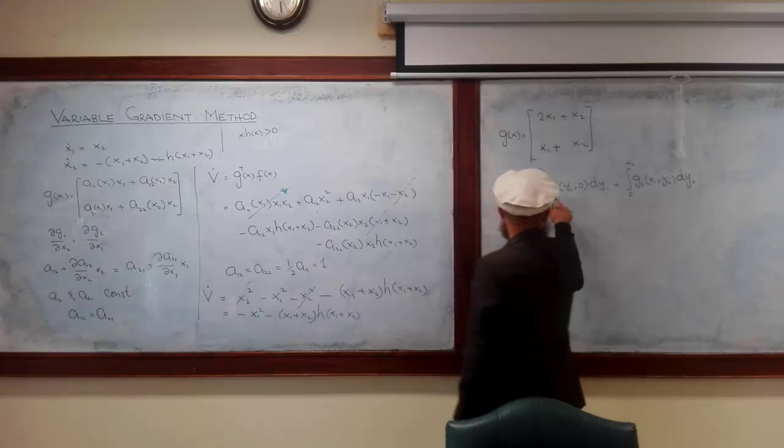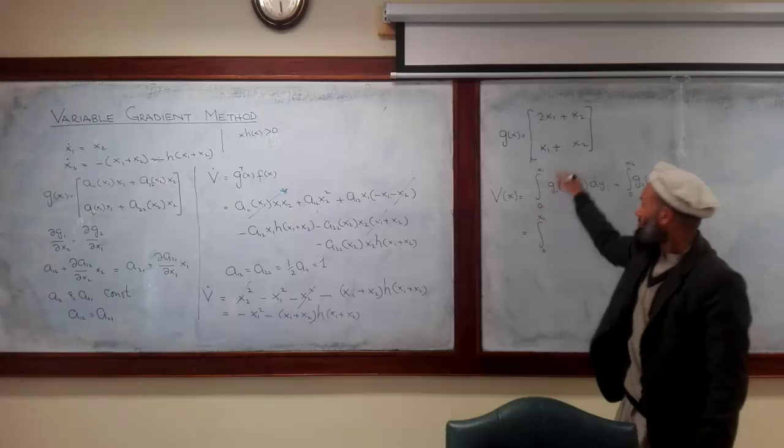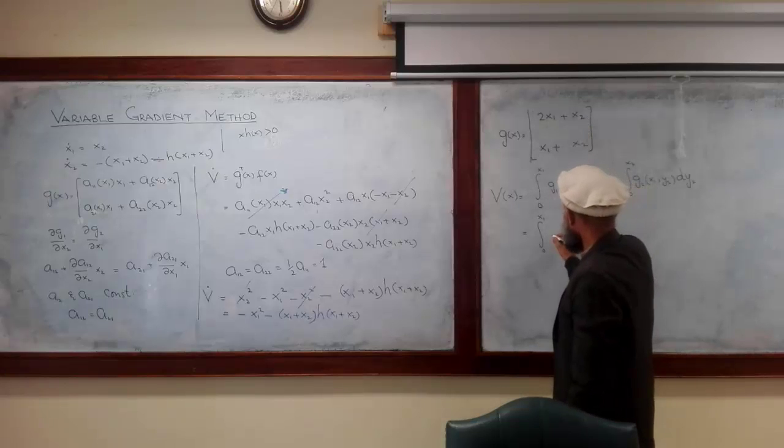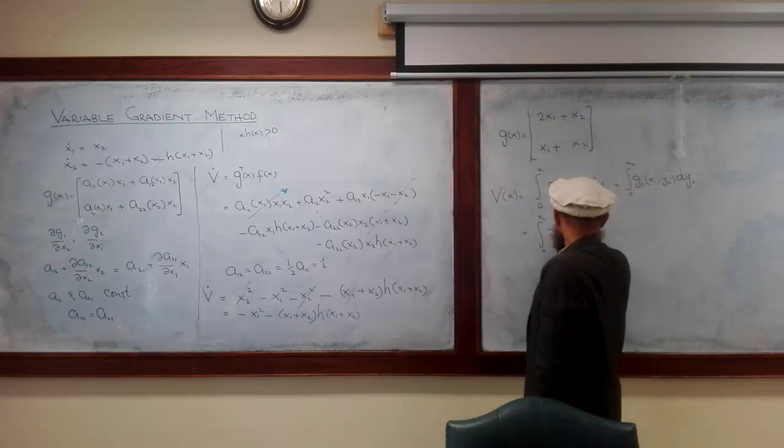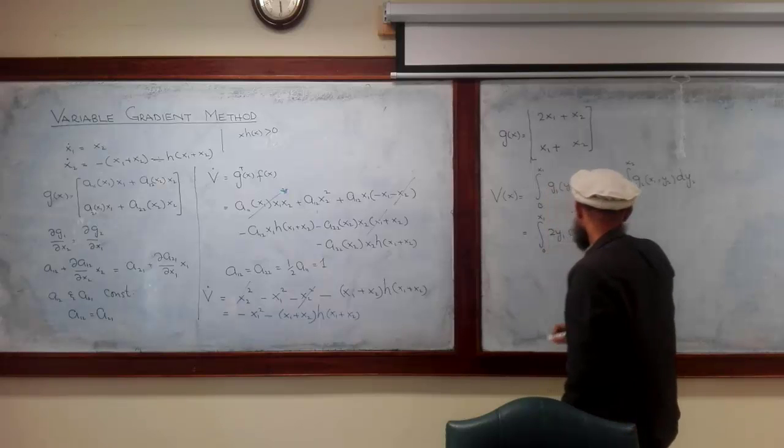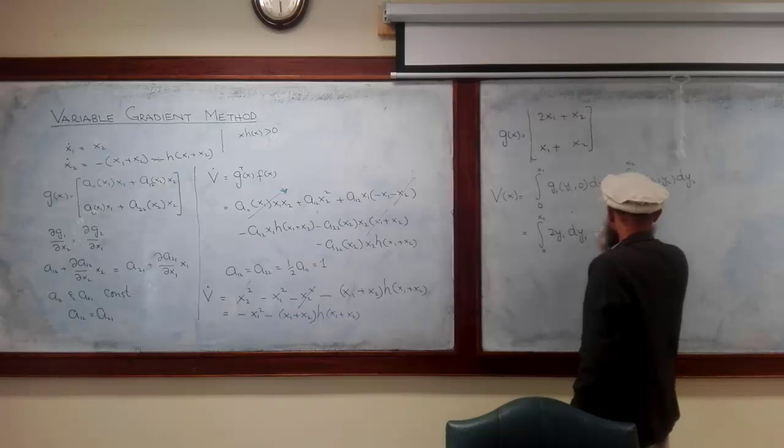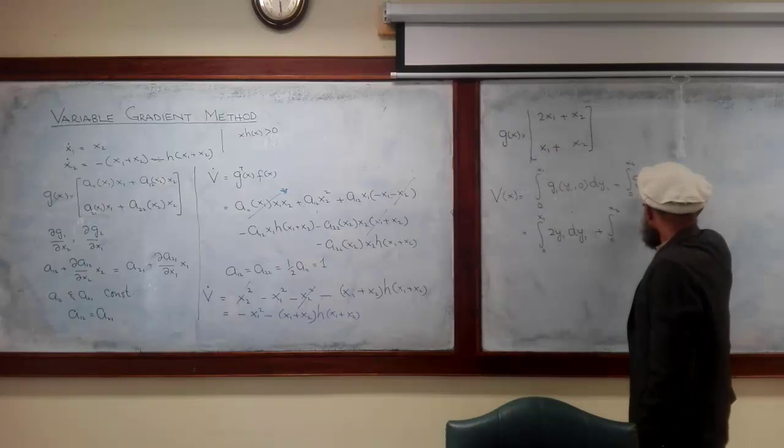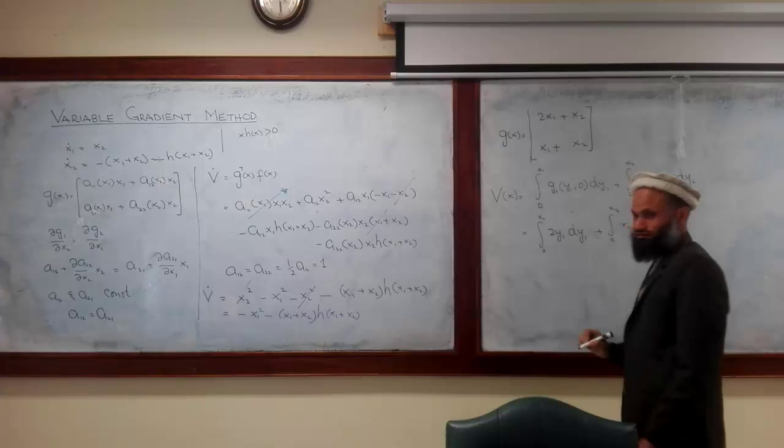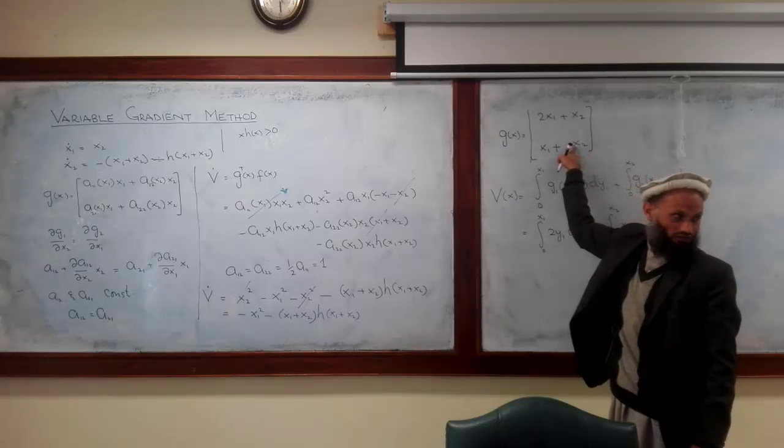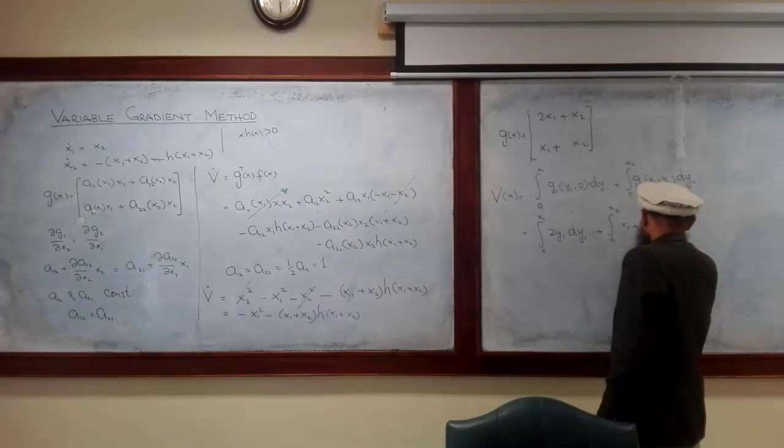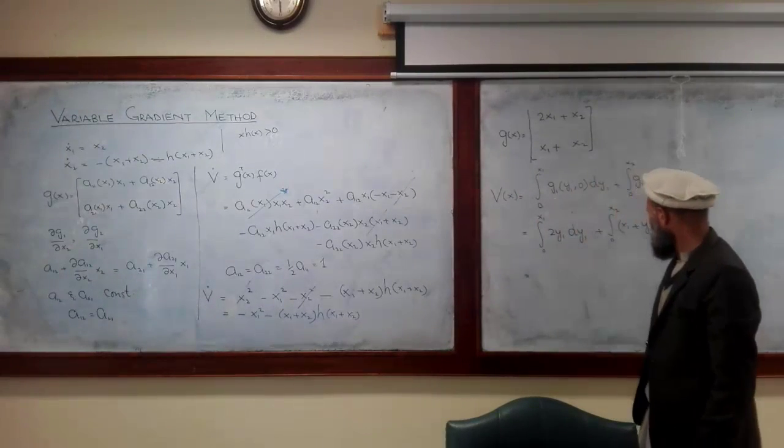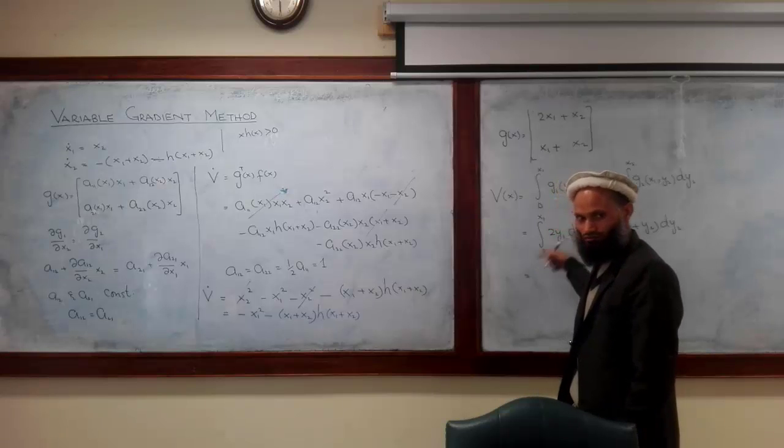Integration from 0 to x1. What is G1? This was the first term with second argument substituted equal to 0. So we write 2y1 and its integration dy1. Here integration from 0 to x2 and what is G2? G2 is x1 plus y2. So what is its integration? Y1 square by 2, 2 is cancelled out. If we substitute the limit of integration, we get x1 square by 2.